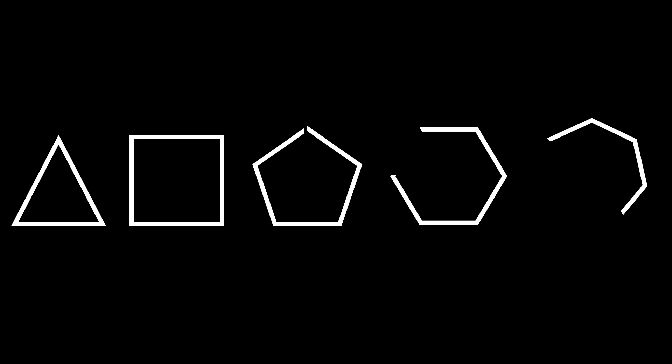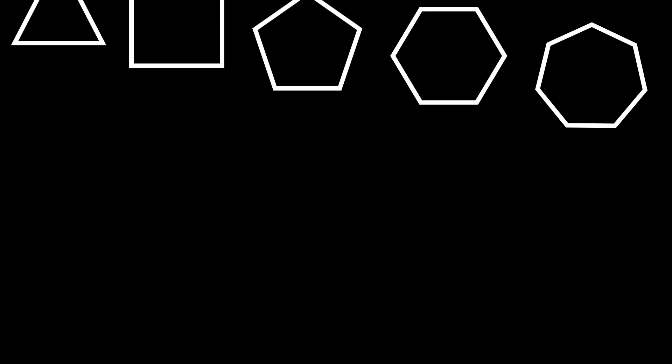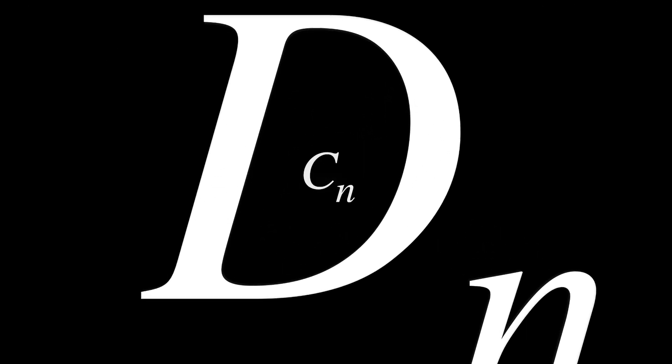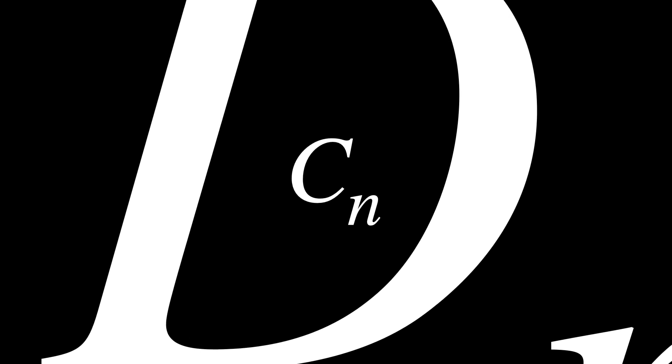Dihedral groups describe objects which also have bilateral symmetry, meaning that they look the same when reflected. They're usually written as DN. All the actions we can do in CN are also actions in DN, because it involves rotation. But since D permits flipping, there are twice as many actions in DN as there are in CN. In dihedral groups, for any possible rotation, there's a possible flip.